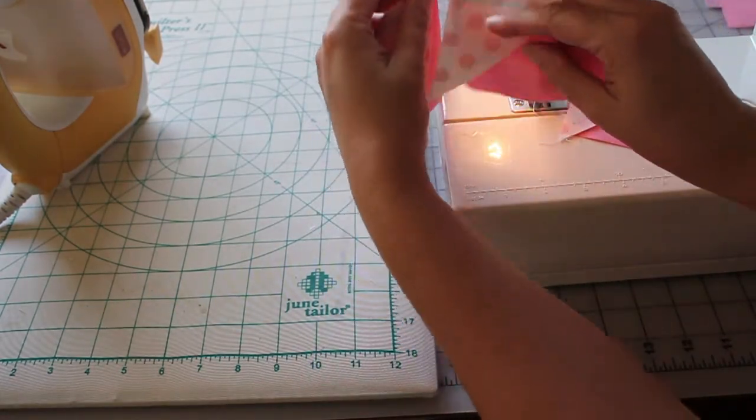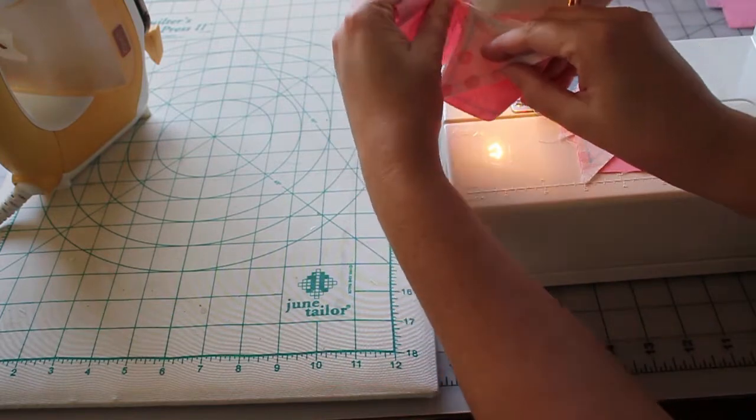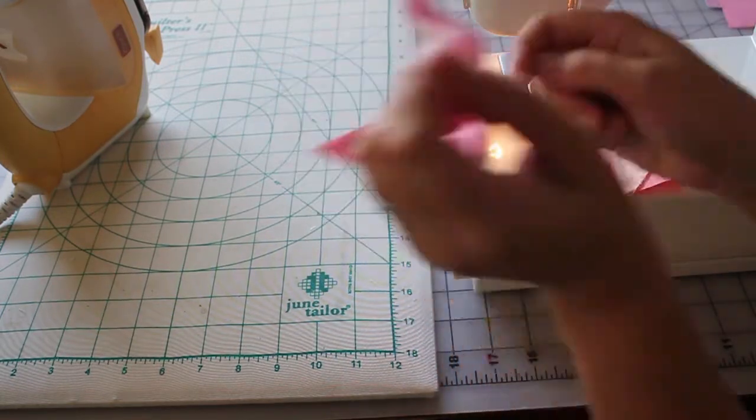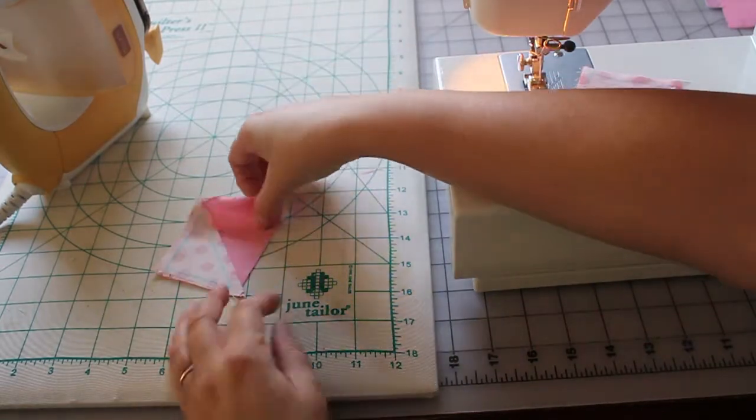I'm just using the blade here on the edge of my sewing machine to trim these all apart. And I can trim off the tails of thread on the first one.